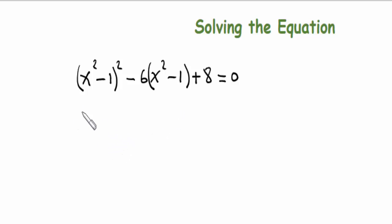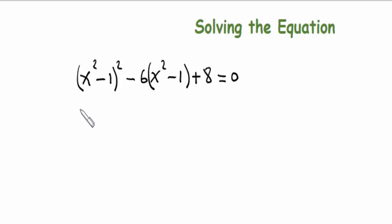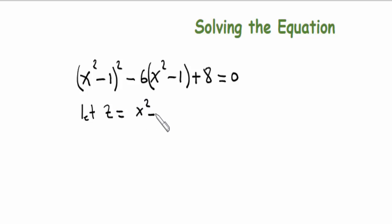We're going to use substitution because expanding it would be too much. We'll start by letting z equal x squared minus 1, and replace it back in the equation.